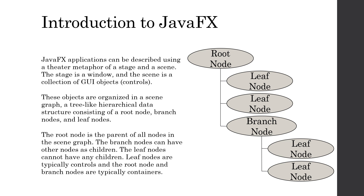We talk about a stage and a scene — the stage is going to be the application window, and the scene is going to be the collection of GUI objects or controls. Those different controls are put into containers, and you'll have a top-level container which holds all the content. That top-level container is what needs to be included as the scene. The objects are organized into what is known as a scene graph, which is a tree-like hierarchical data structure that consists of a root node.